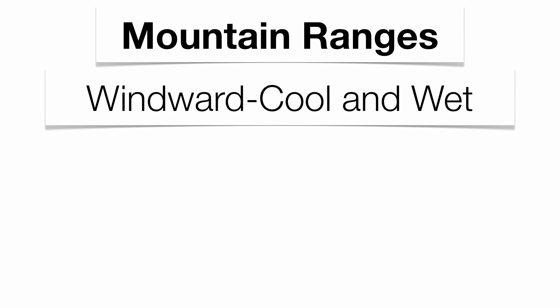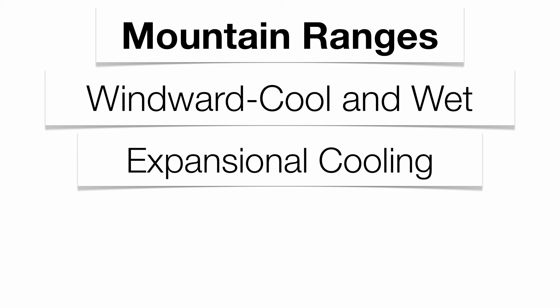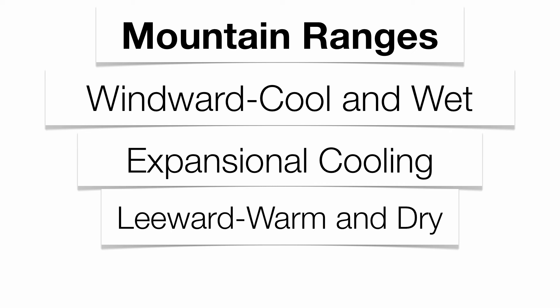The next factor is going to be mountain ranges. You have two parts of a mountain: the windward side and the leeward side. The windward side of the mountain tends to be very cool and wet — that's the side where moisture comes off the ocean. Once that moisture-laden air mass hits the mountain range, orographic lifting takes place, which means the air mass is forced up and over the top of the mountain. As that happens, expansional cooling takes place. Because there's less pressure at the top of the mountain, the air mass expands, cools to the dew point, and you get precipitation.